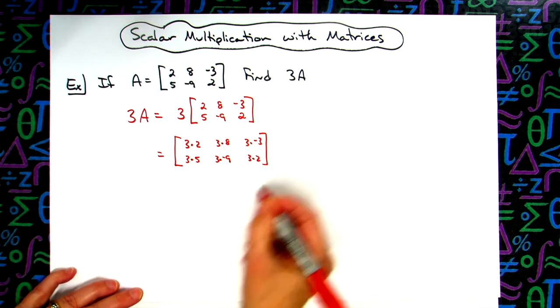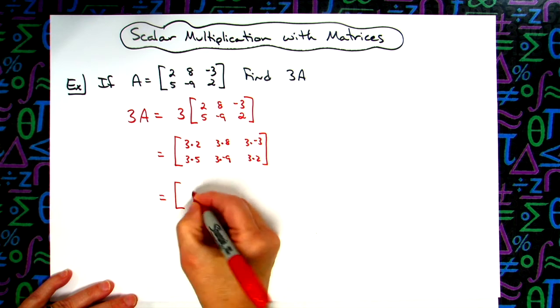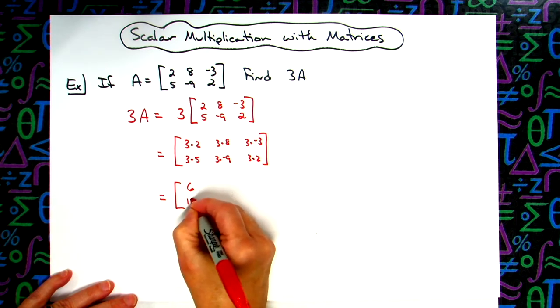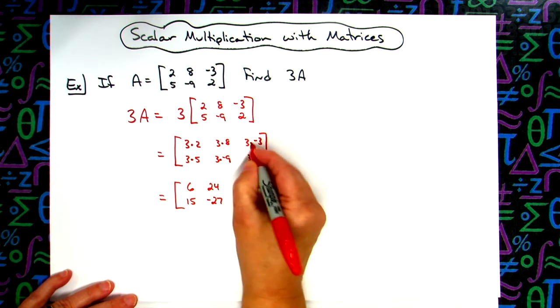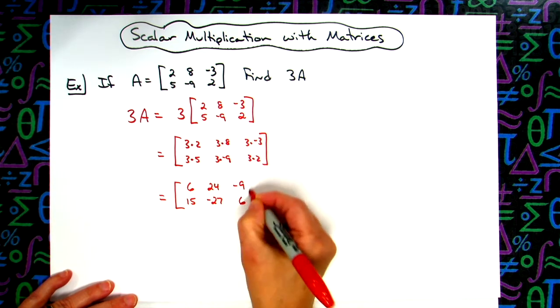Okay, now going through and performing those multiplications we're going to have a 6 and a 15, a 24 and a negative 27, a negative 9, and a 6.